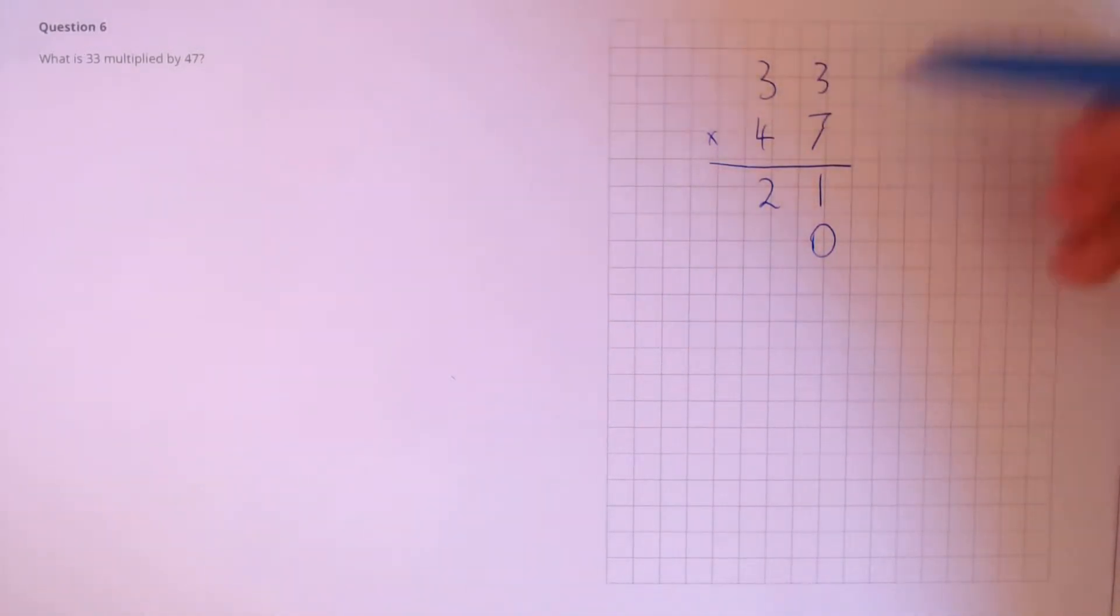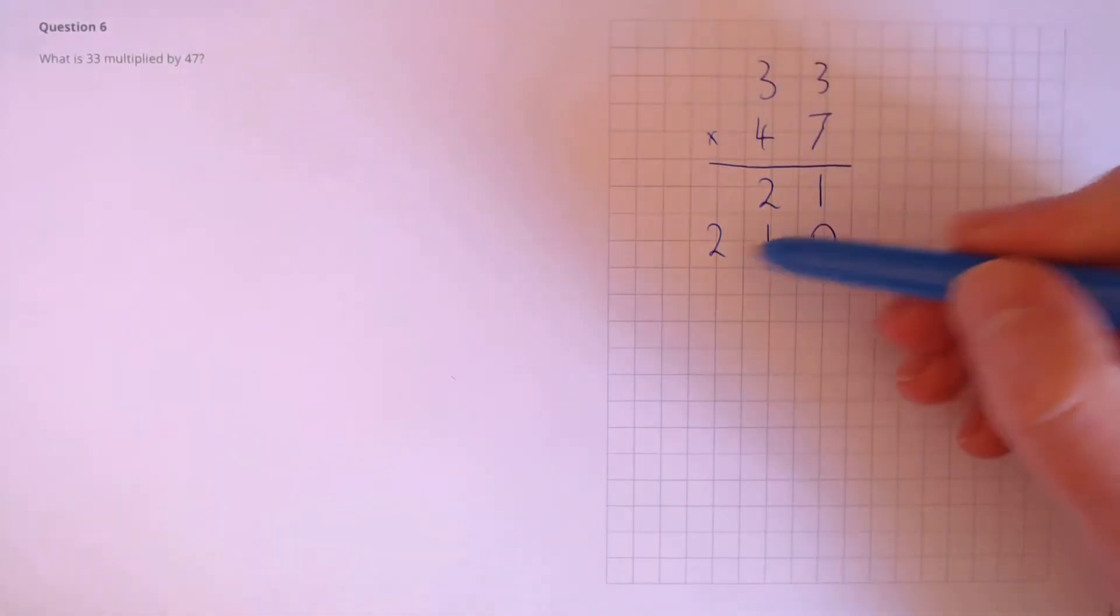So 3 times 7, that's 21 again. Like we said, this was a tens column, that's 30 times 7, which is actually 210.